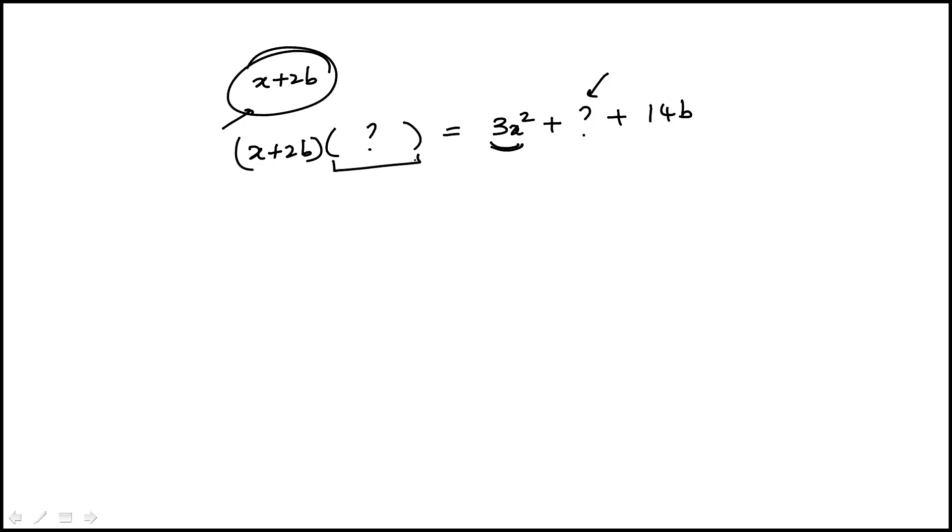They both have 3x squared. That means this piece that we need to multiply it by has to have a 3x because that's how you'll get 3x squared. And then to get 14b, this term has to be 7.